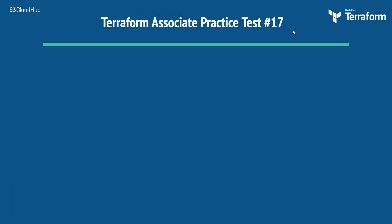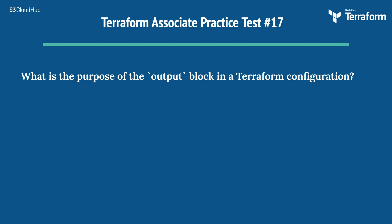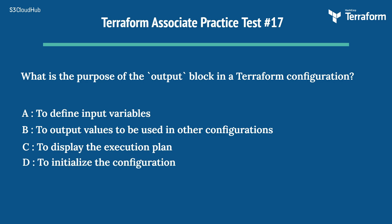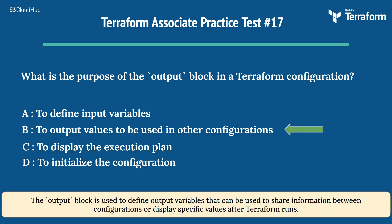Question 17: What is the purpose of the output block in a Terraform configuration? Options: A) To define input variables, B) To output values to be used in other configurations, C) To display the execution plan, D) To initialize the configuration. The right answer is B) To output values to be used in other configurations. The output block defines output variables that can share information between configurations or display specific values after Terraform runs.